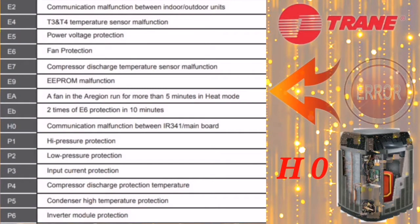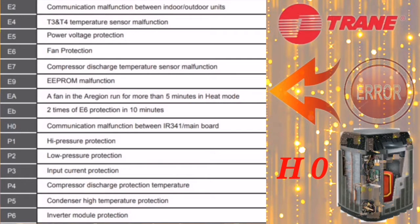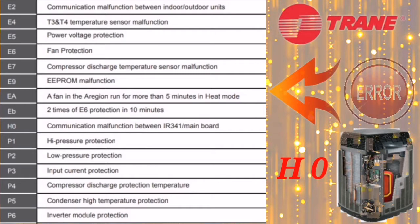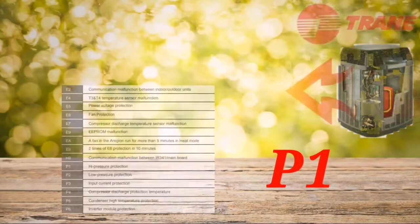The next error code is H0, which means communication malfunctioning between the IR module and the mainboard. When you get error H0, either the mainboard, the outdoor PCB, or the indoor PCB is faulty. To diagnose, check the output supply of the communication cable from the indoor PCB — it should be between 13 to 24 DC volts. If you don't get that voltage from either the indoor or outdoor unit, the respective PCB is faulty and needs to be replaced.